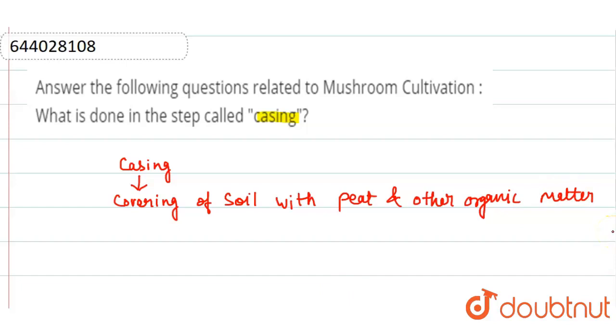Casing soil acts as a substrate used to grow various kinds of mushrooms at home. With the help of casing, we use to grow various kinds of mushrooms at home. It is very important for mushroom cultivation.